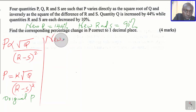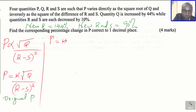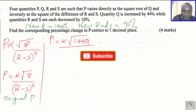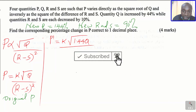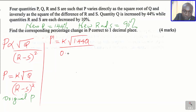So new P — I'm going to use P' to indicate new P — equals K times the square root of the new Q, which is 144% = 144/100 = 1.44Q, divided by the square root of R and S each decreased to 90%, giving 0.9R minus 0.9S.